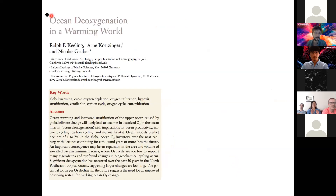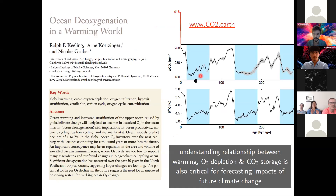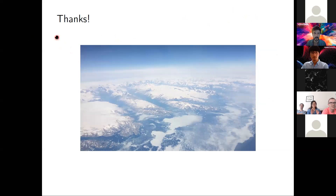Why else might we care about this beyond understanding ice ages? We've actually observed oxygen depletion in the ocean in recent decades, and it's expected to continue as we keep pumping more CO2 into the atmosphere. To give a sense of scale: there was a difference of 100 parts per million CO2 between the last ice age — when kilometer-thick ice covered New York City — and the year 1700. We've added more than that much CO2 to the atmosphere since 1700. Clearly, if we want to understand the impact of human CO2 emissions on the marine environment, we need to better understand the relationship between CO2, oxygen depletion, and climate. Thanks for tuning in — I'm happy to take some questions.